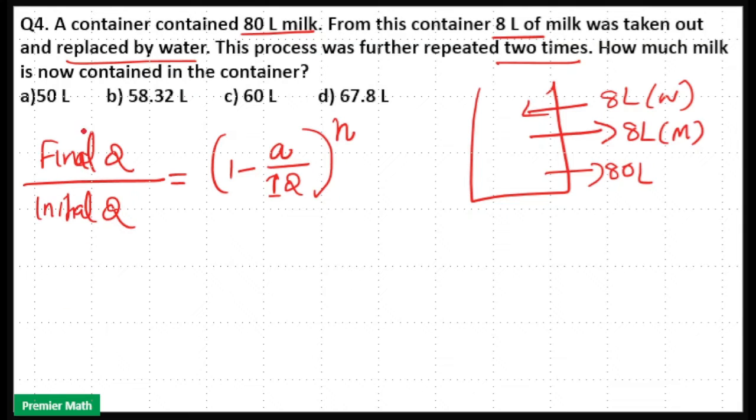Final quantity is equal to, we have to find out the final quantity. So final quantity divided by initial quantity is equal to 80 liters. That is equal to 1 minus amount removed or replaced, here 8 liters of milk taken out and 8 liters of water added. So 8 liters is the amount removed or replaced, divided by initial quantity which is equal to 80.